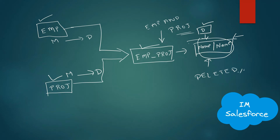As we all know, in a master-detail relationship, if the master record is deleted the detail record will also be deleted. So in the same manner, if any one of the master records is deleted — whether it's Employee or Project — the corresponding record in the Employee Project junction object will be deleted. We will see this in the developer environment to confirm how this scenario works.